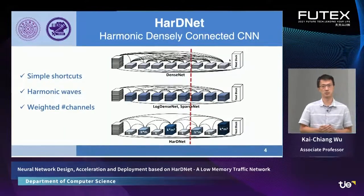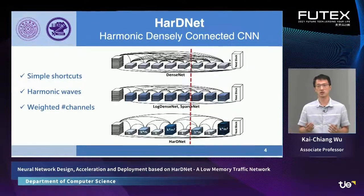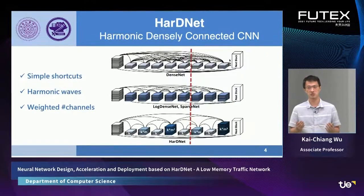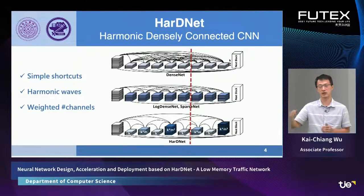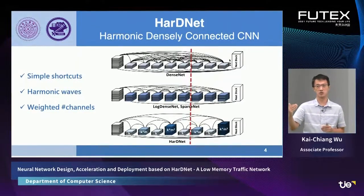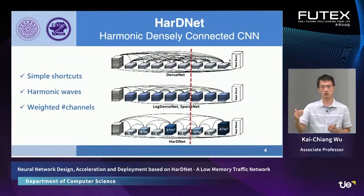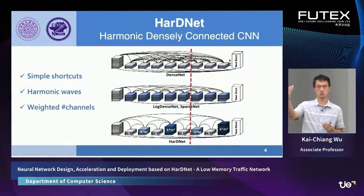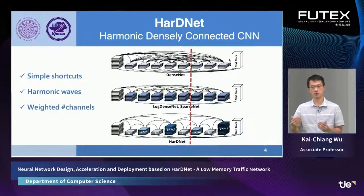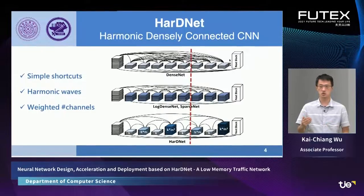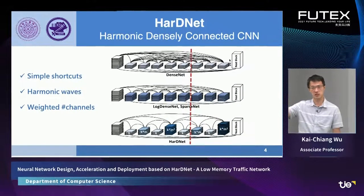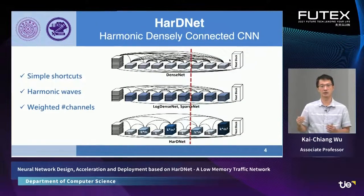Here is a brief introduction to our proposed HardNet. The full name for HardNet is Harmonic Densely-Connected CNNs. We see three different architectures on the right-hand side: the top one is DenseNet, the middle one is Logged DenseNet or SparseNet, and the bottom one is our proposed HardNet. Compared to DenseNet, the property of our HardNet is that it has simple shortcuts — instead of having many densely connected connections between blocks, our HardNet has only simple shortcuts.